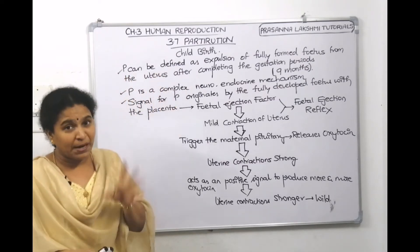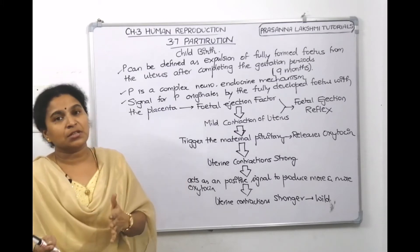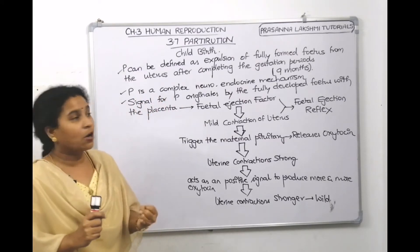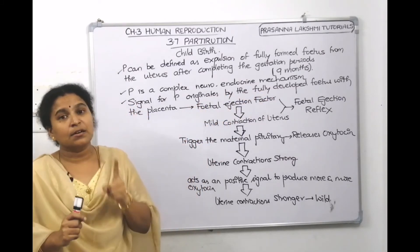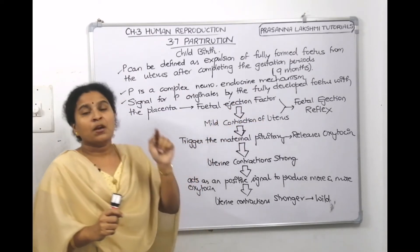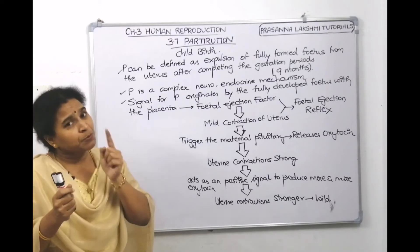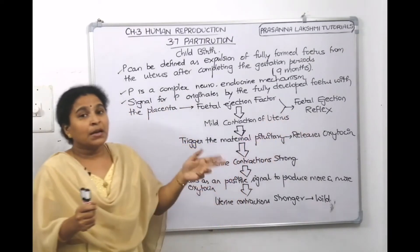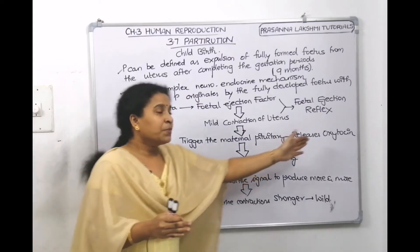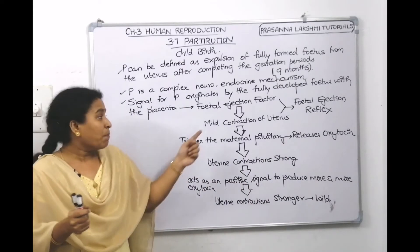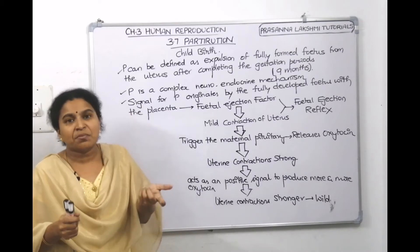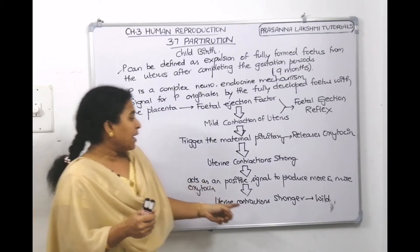To summarize: parturition is the expulsion of the fully formed fetus from the uterus after completing the gestation period. It is a complex process involving neural and endocrine mechanisms. The signal originates from the fully developed fetus and placenta, which release the fetal ejection factor causing mild uterine contractions — the fetal ejection reflex. This triggers the maternal pituitary to release oxytocin, which makes the mild contractions strong, and those strong contractions stimulate even more oxytocin release.